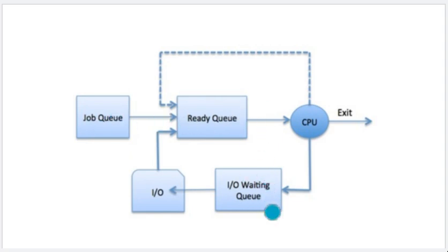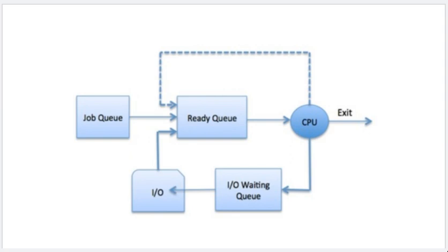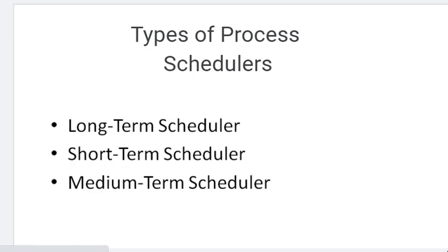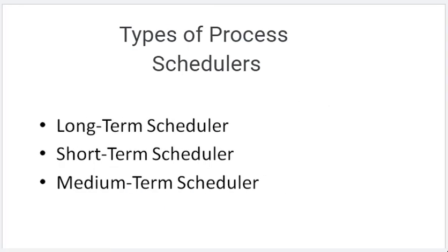So the three queues work at different stages — different processes are stored in different queues at different stages. This is simply process management: we manage the process before execution, after execution, and after partial execution. Next is scheduling — I am talking about the scheduling process.